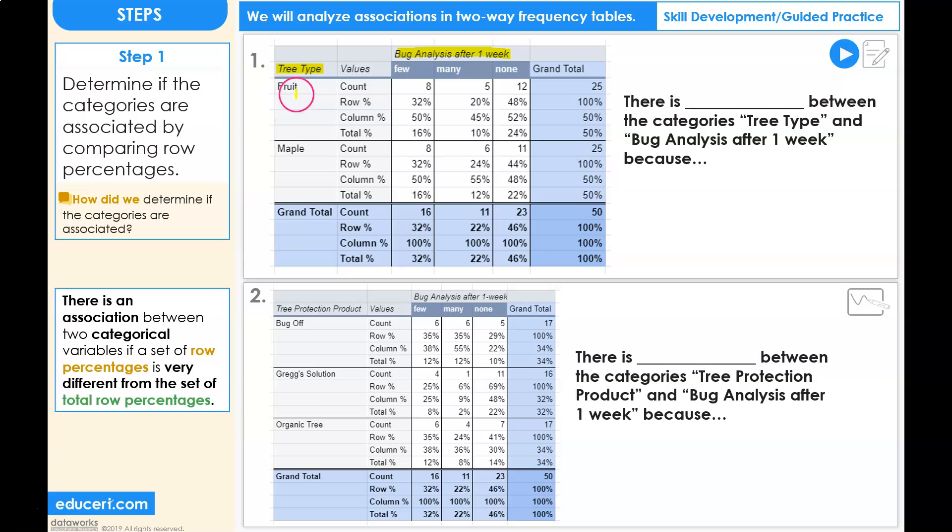The two tree types are fruit and maple, and the bug analysis after one week: few, many, or no bugs on the tree.